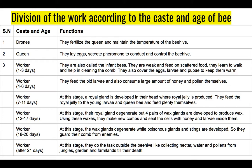The drone also helps maintain the temperature of the beehive. The queen bee's major function is laying eggs, but it also secretes pheromone, a unique smell, that helps to control the beehive. Worker bees of the first three days are called infant bees. They are very weak, fed only scattered food, learn to walk, help clean the comb, and cover the egg, larva, and pupa to keep them warm.